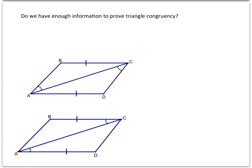You have to ask yourself if a diagram presented to you in a problem has enough information to actually use one of these congruence theorems or postulates. In this first example, we notice that we have side AC — every side is congruent to itself, and that is a shared side, so those sides are congruent. We also have AD congruent to BC. And then our angles given on both of these — you'll notice that they're not between these two sides. So in this situation, there's actually not enough information to prove congruency.